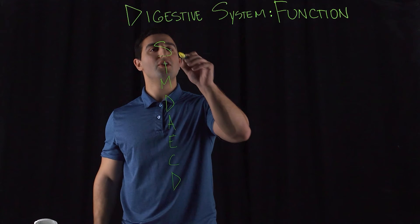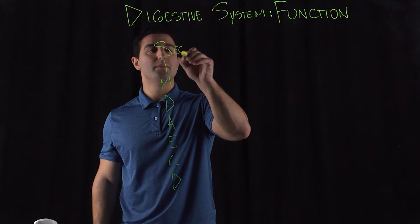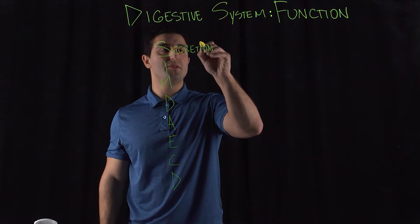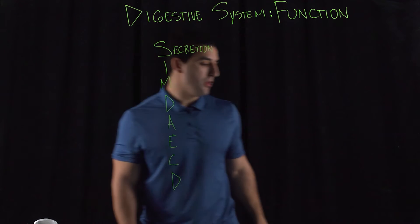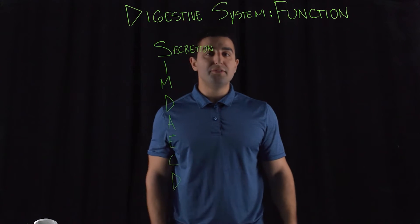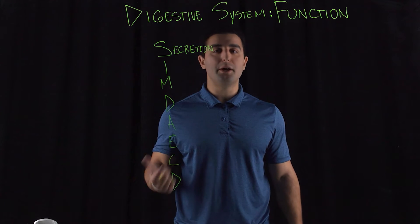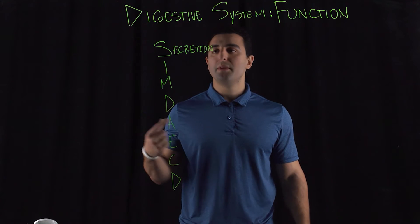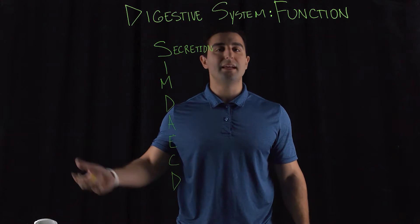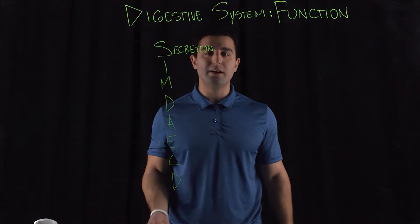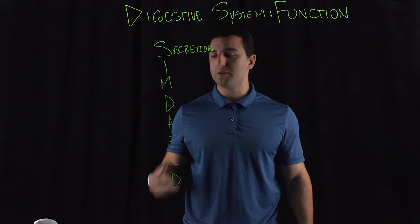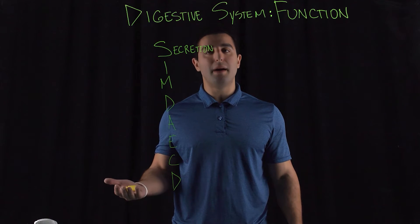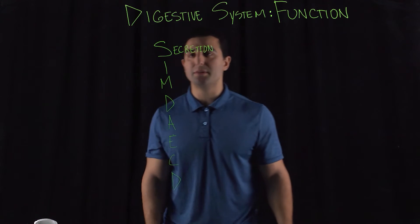First we start off with secretion. Your body begins to secrete special enzymes, special chemicals, specific fluids — for example, saliva to help enhance lubrication, digestive enzymes, amylases, lipases, peptidases to help break down special compounds that are needed, and also bile. So there are a lot of secretions that take place.